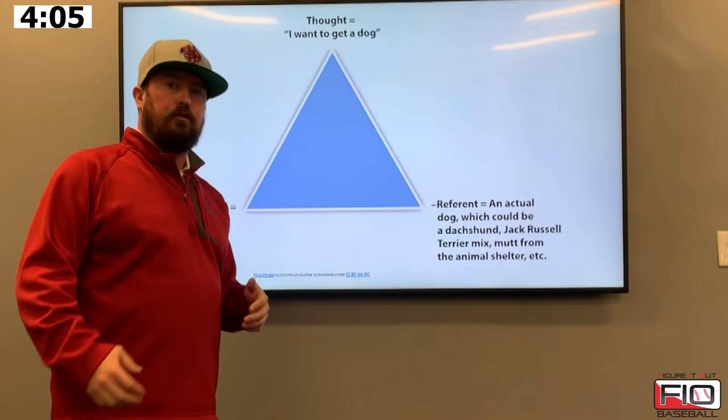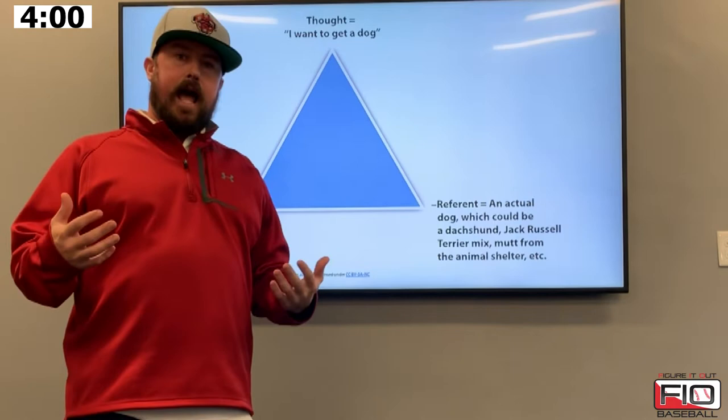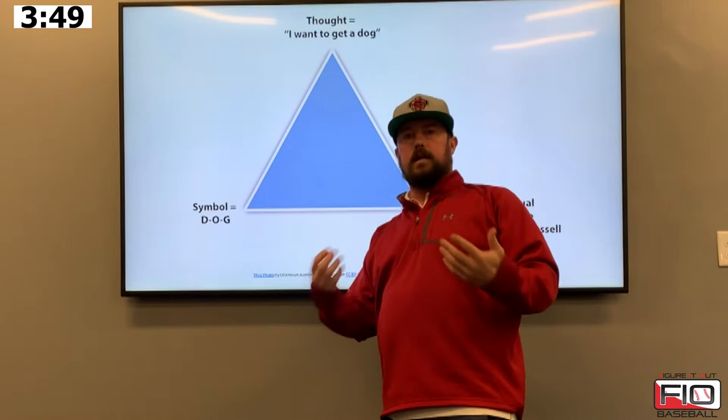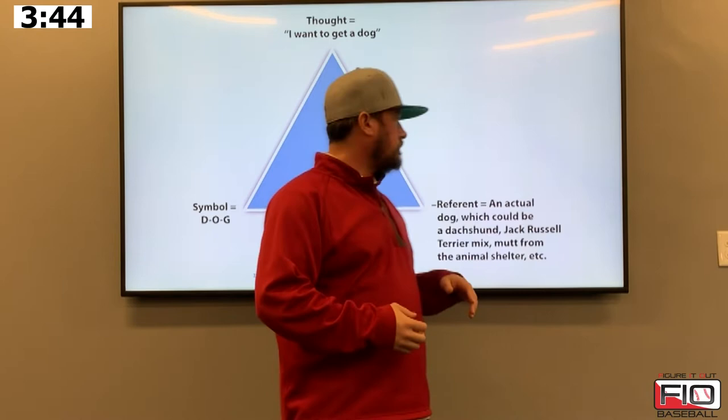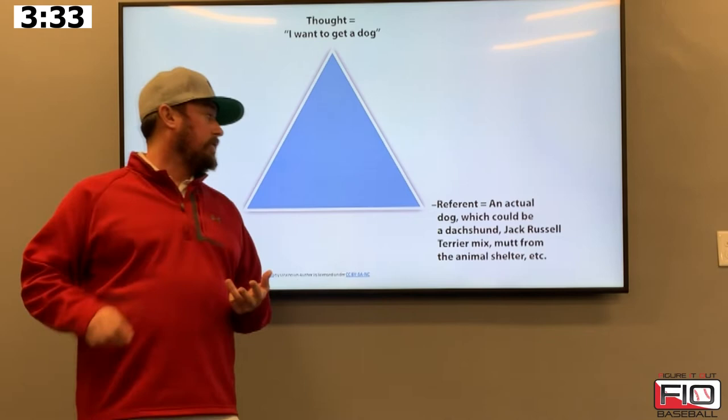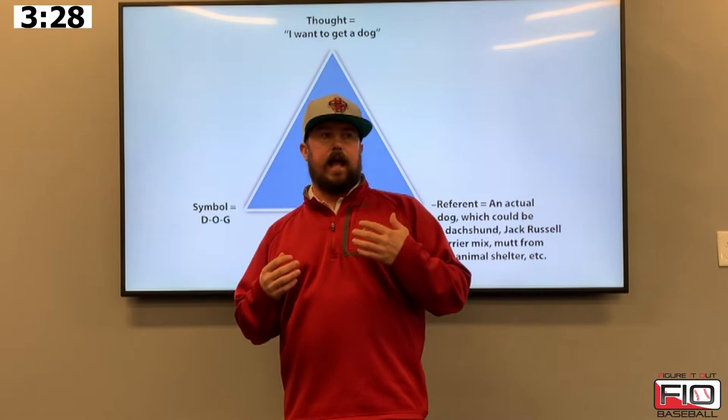To give you a better example and a visual of what I'm talking about here: imagine a triangle. We have our thought at the top. This is as simple as it can be explained. Your thought in this model is, 'I want a dog.' So we come up with a symbol, and through our language, dog is D-O-G. That is the symbol — that's our language we're using to convey our thought. And the referent — we could be referring to a dog, an actual dog. And that could be a Dachshund, a Jack Russell, a Terrier, a Mutt, a Rottweiler, whatever. It is a broad term.